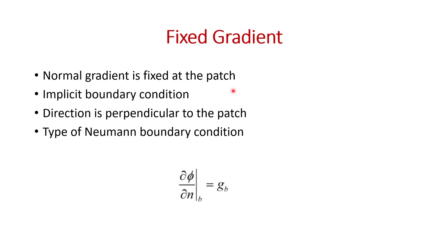The normal gradient will be fixed at the patch, at the boundary. The fixed gradient is an implicit boundary condition. Implicit means this boundary condition will be dependent on a variable which is going to change — that variable is still going to be calculated and is present in the matrix. The boundary is dependent on some inside variable, the phi variable, so it is implicit — not explicit. While calculating the fixed gradient, we are going in the direction perpendicular to the patch, and this is a type of Neumann boundary condition.